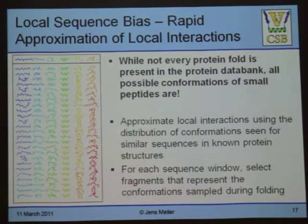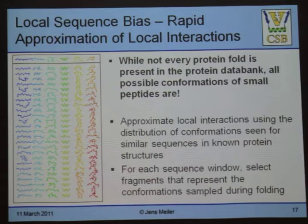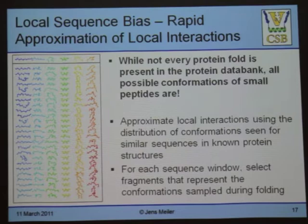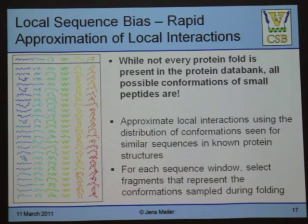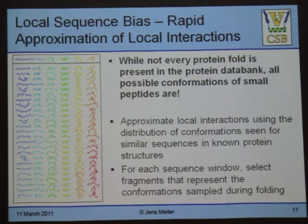For backbone conformations, we do another trick. We use the protein data bank to find likely conformations of peptides. You take your amino acid sequence of your protein and chop it up into fragments. The length of the fragment is yours to choose — Rosetta uses nine amino acid fragments that are overlapping: amino acids one to nine, two to ten, and so on. We take the sequence and the predicted secondary structure of those fragments and search the protein data bank for proteins of known structure that have peptides of a similar sequence.